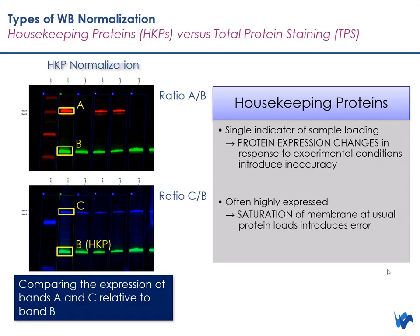Probably the most common internal reference used for western blot normalization is housekeeping proteins. Housekeeping proteins are a very simple way to integrate normalization into your western blotting protocol because they are as simple as adding another primary antibody and secondary antibody into your current protocol. Once integrated, you can compare the expression of your housekeeping protein to your protein of interest and determine the ratio — for example, protein A to protein B — and use that as your normalization factor.